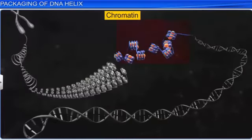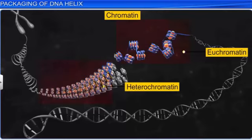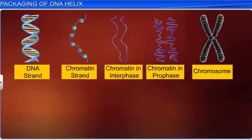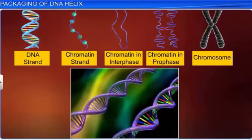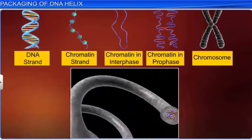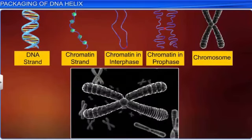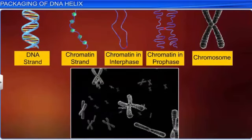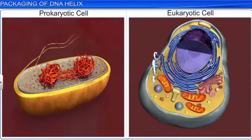Moreover, of the two types of chromatin fibers, euchromatin is transcriptionally active while heterochromatin is inactive. These chromatin fibers coil further and condense to form short and thick bodies called chromosomes during the metaphase stage of cell division. In this way, a DNA double helix is packaged into a chromosome, which is further packaged within the nucleus.